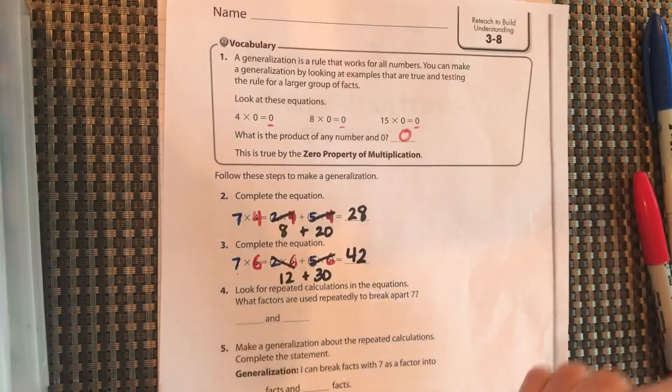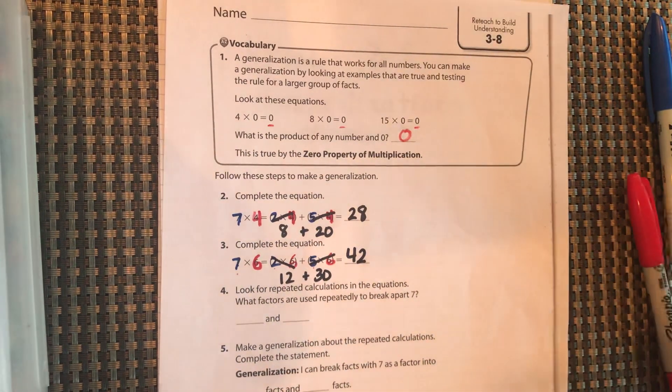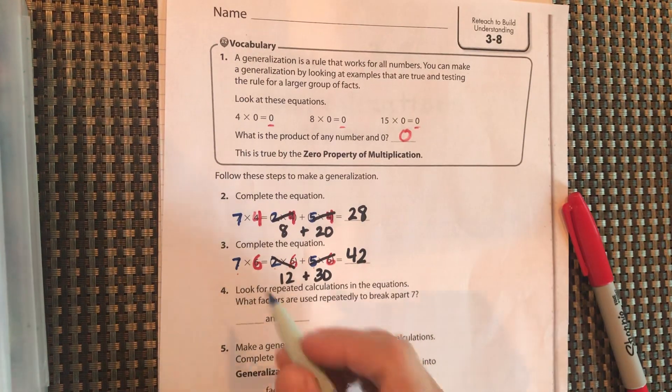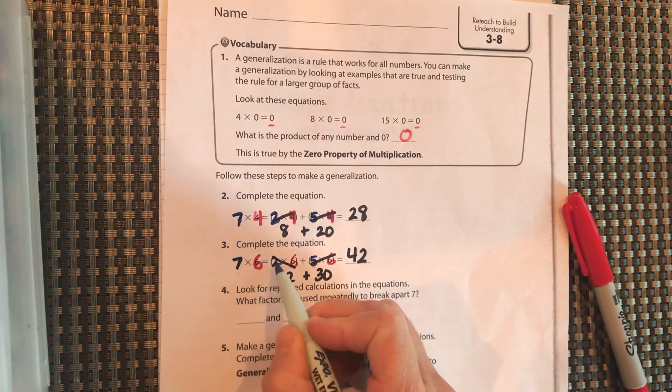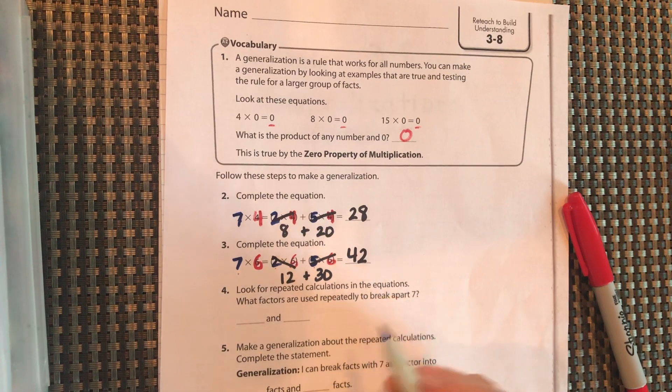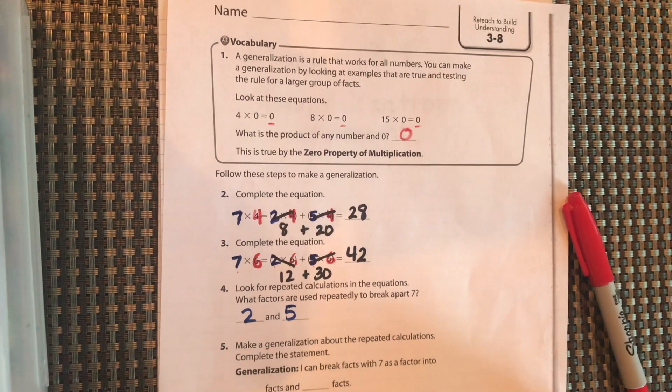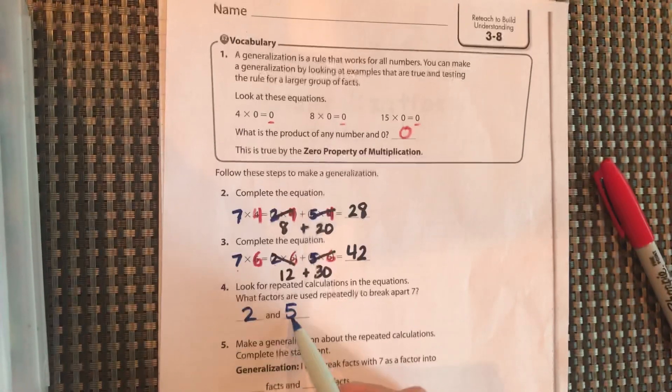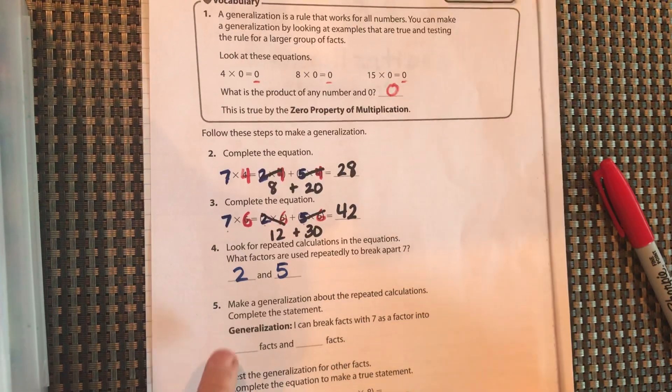So we want to look for repeated calculations in the equation. What factors were used repeatedly to break the 7 up? Here we broke it up into 7 is broken up into 2 and 5. And here we also broke it up into 2 and 5. So 7 can be broken up into 2 and 5 because we know that 2 plus 5 equals 7. So whether we're multiplying by 7, we're multiplying that factor times 2, and then multiplying it times 5, and then adding them together, we're getting the same answer that we would.